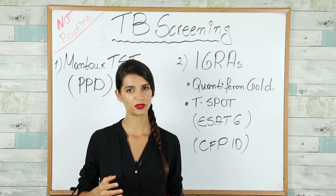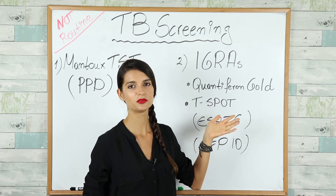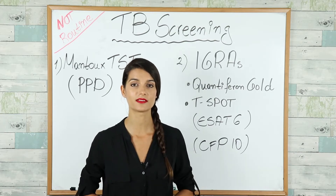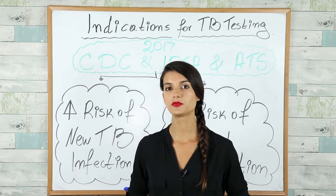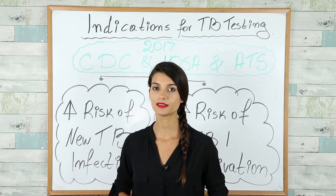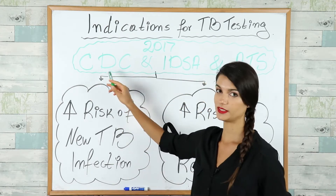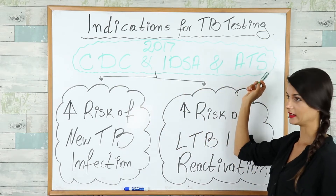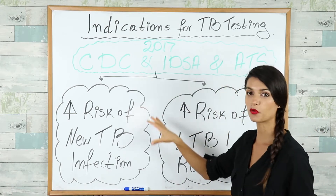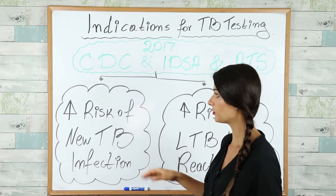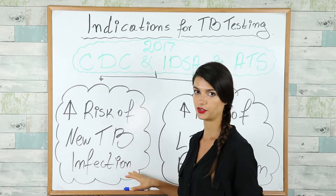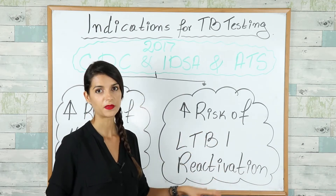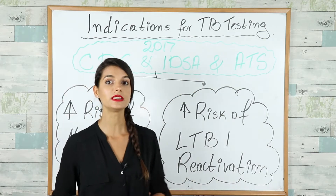The disadvantages of IGRA tests include cost, as they are relatively new and still expensive, and they are not used in children less than 5 years of age. According to the 2017 recommendations by the CDC, the Infectious Disease Society of America, and the American Thoracic Society, we must test two groups: people at increased risk of new TB infection, and people at increased risk of latent TB infection reactivation.